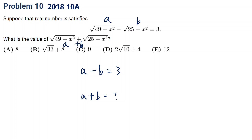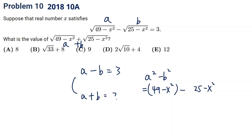If we multiply them together using the difference of squares formula, a squared minus b squared gives us (49 minus x squared) minus (25 minus x squared), and the x squared terms cancel, giving us 24.